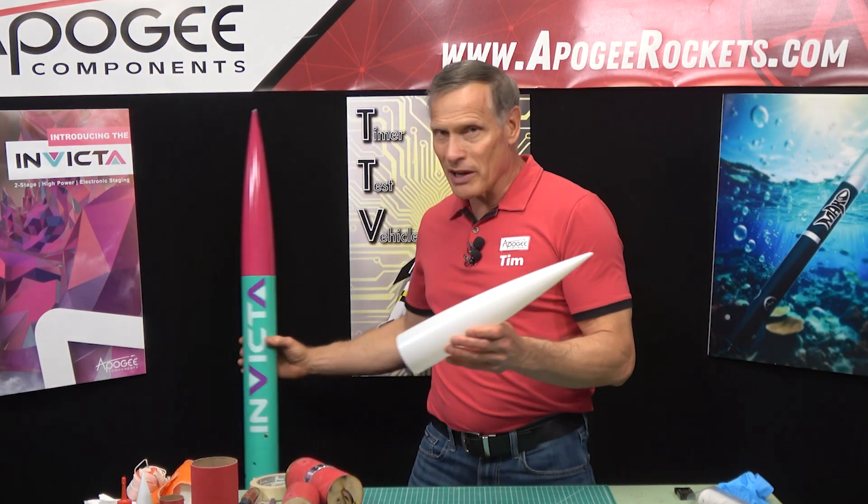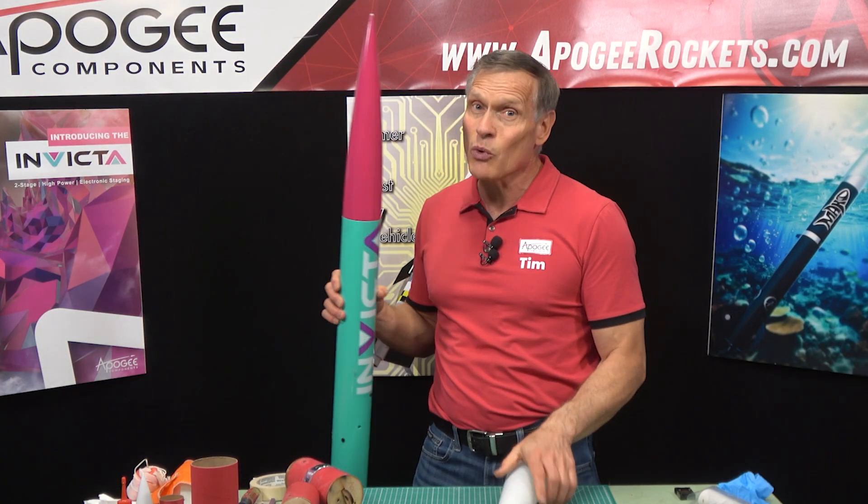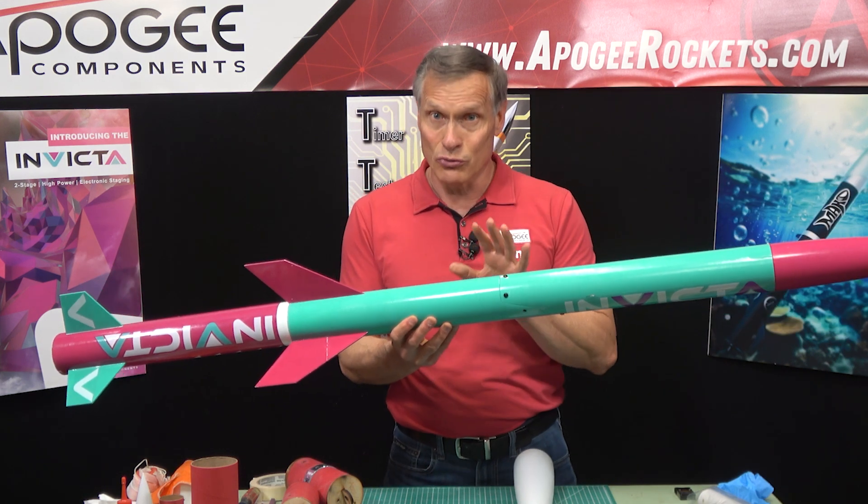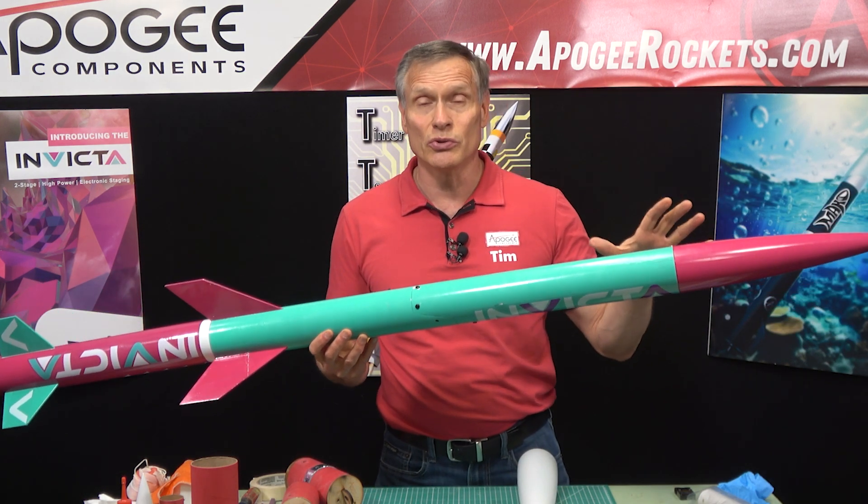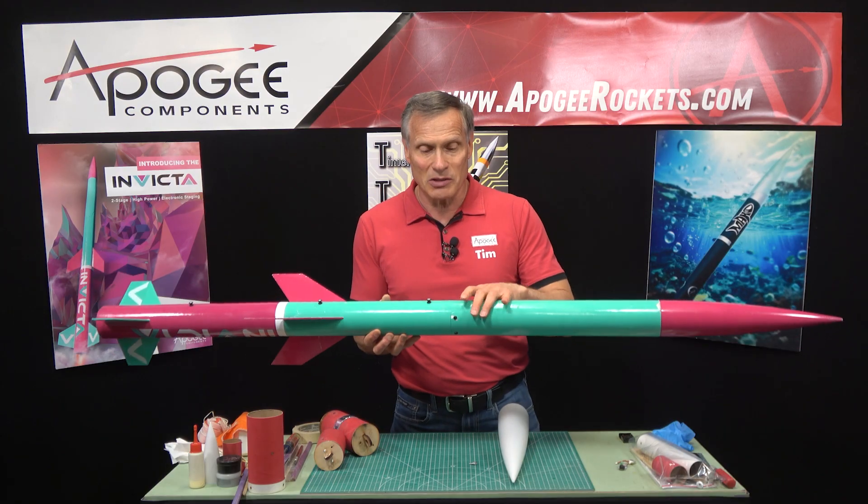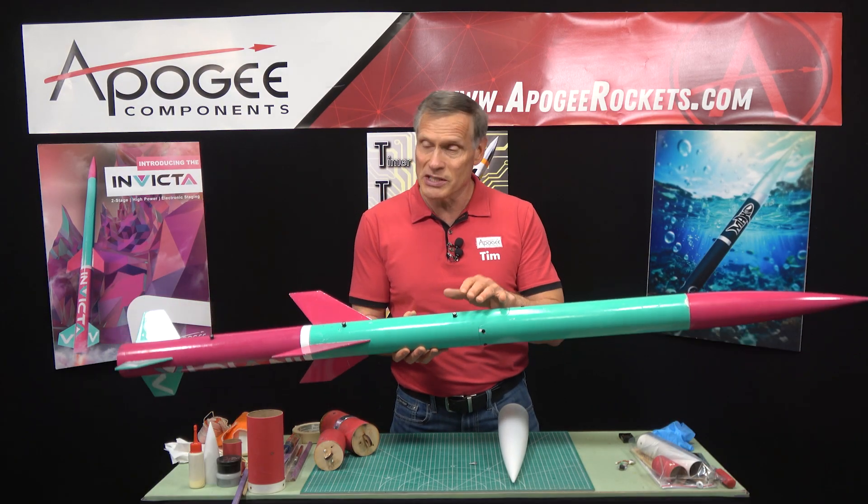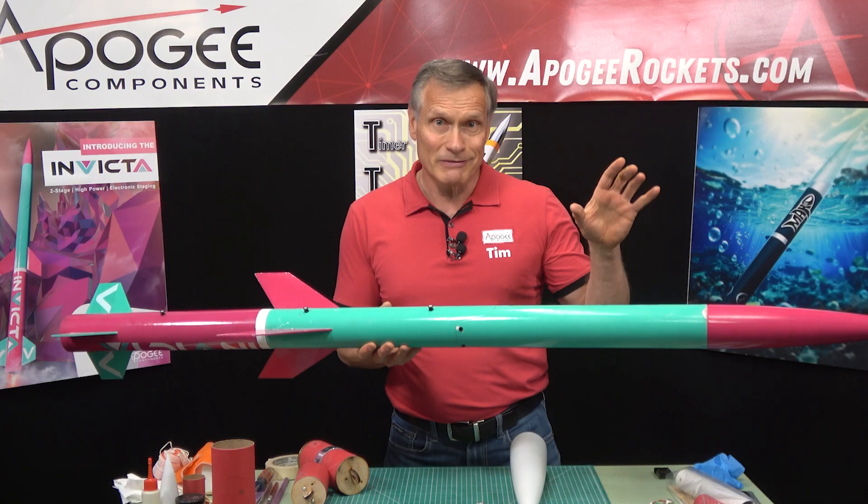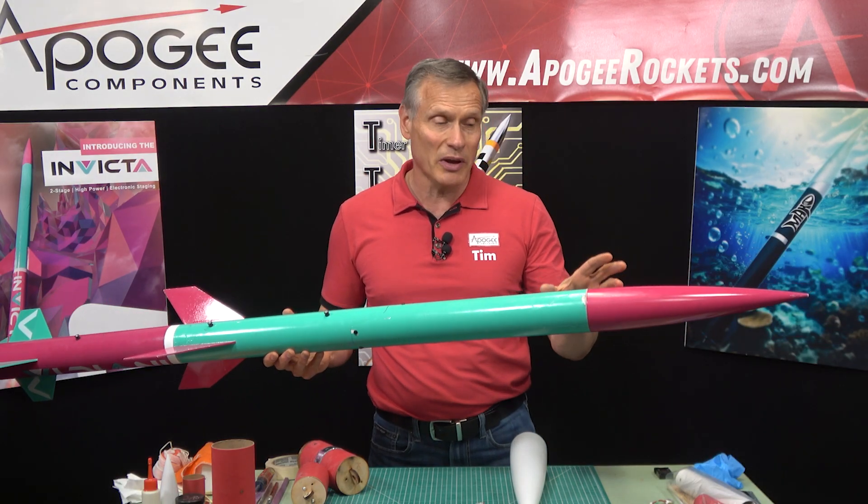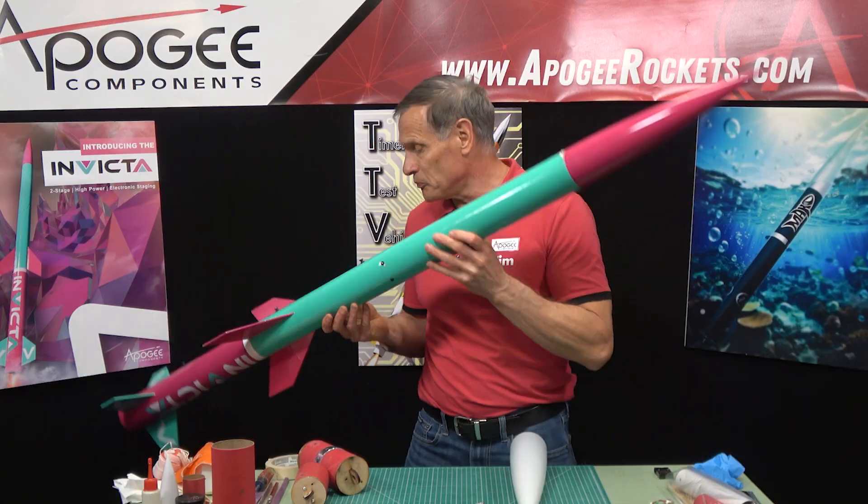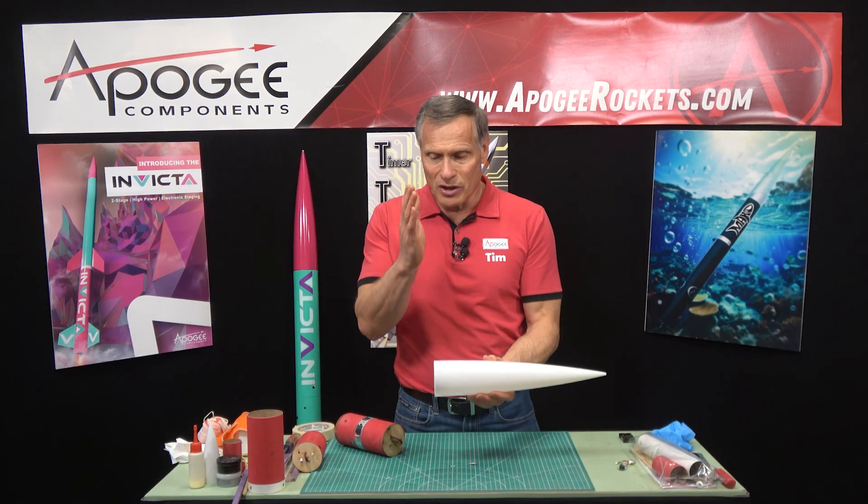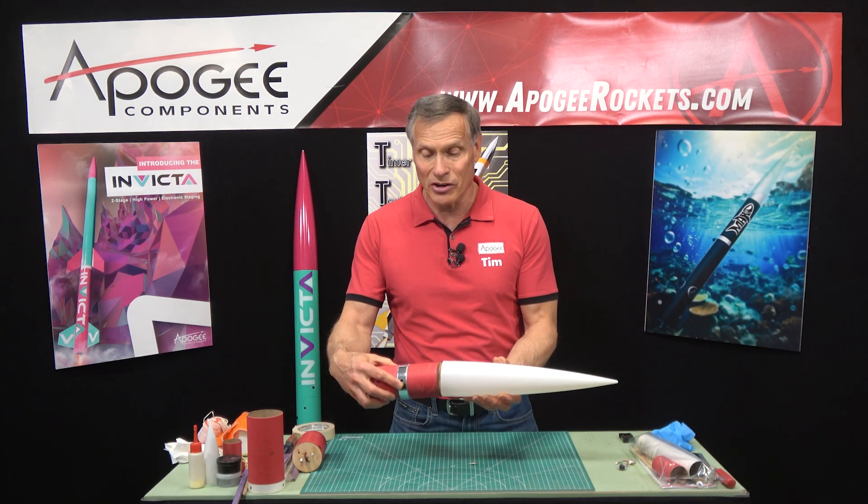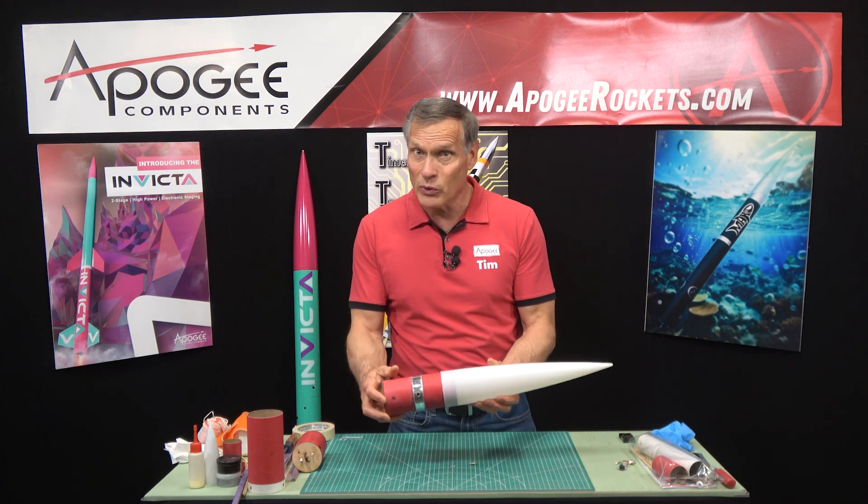So here I have the plastic nose cone for the Invicta and this question comes up a lot in the Invicta rocket because this is a two-stage rocket, it goes really high and people want to do dual deployment in this rocket. The electronics bay is in the middle and it's in the middle for a reason because we need to use the electronics to ignite the motor in the upper stage. But can you put a separate electronics bay up in the nose cone? And that's what we're gonna do. So what we're gonna do is take the nose cone, cut off the back end, cut the shoulder off and can we put the electronics bay into here like we did with the fiberglass? And actually we can.